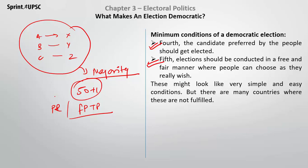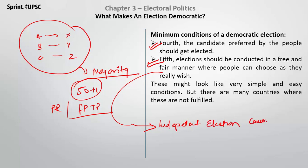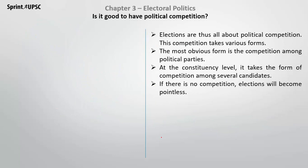The fifth condition is that elections should be conducted in a free and fair manner, where people vote for whoever they want. Who can ensure this? An independent election commission — one that is free and independent, with no pressure from any party or government — can ensure that elections are free and fair with no external influence. These are the basic minimum conditions for democratic elections.